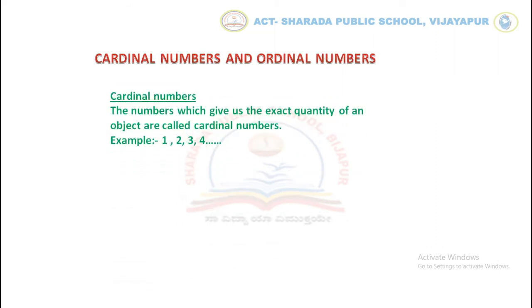Cardinal Numbers: the numbers which give us the exact quantity of an object are called Cardinal Numbers. For example, 1, 2, 3, 4, etc.